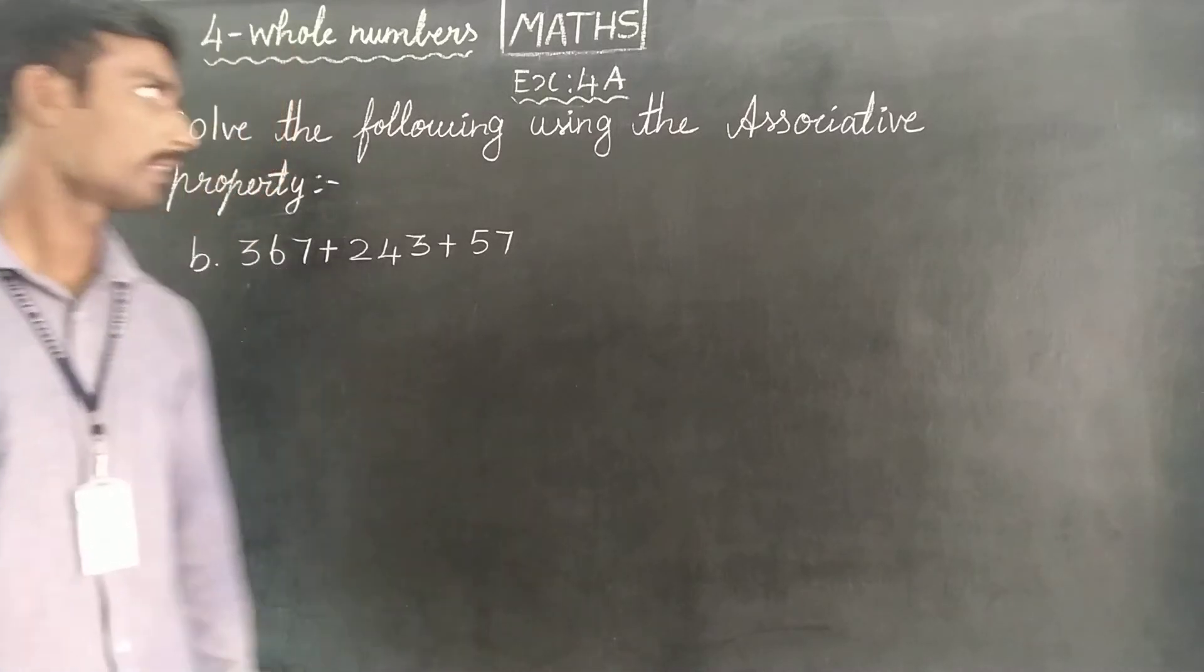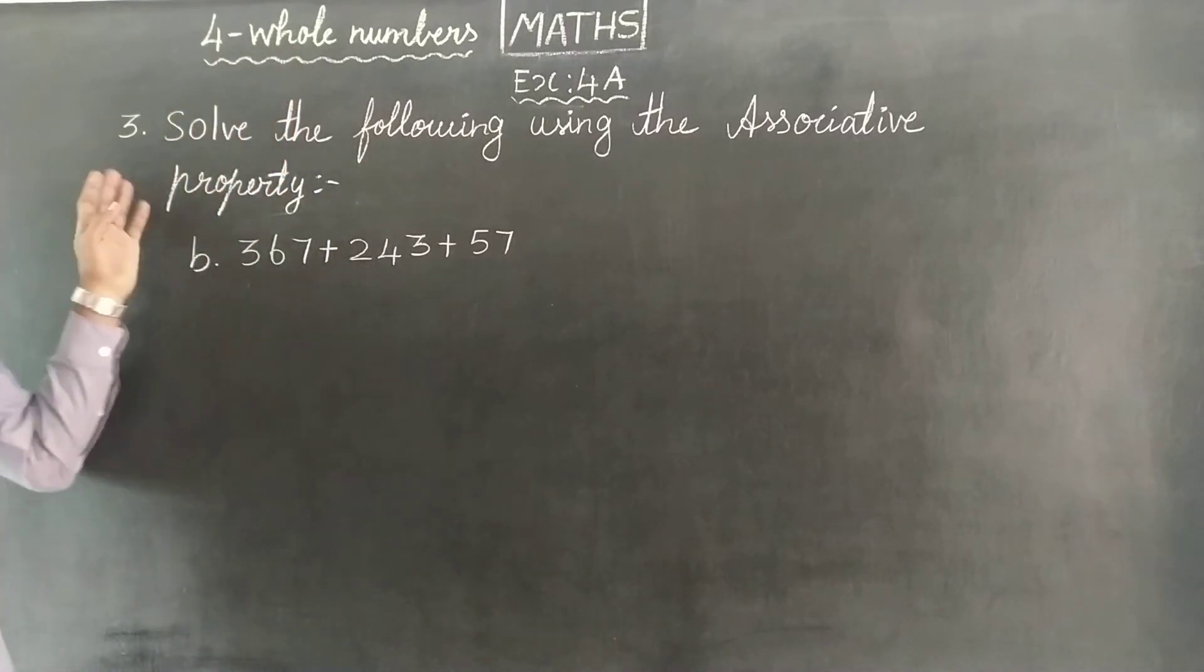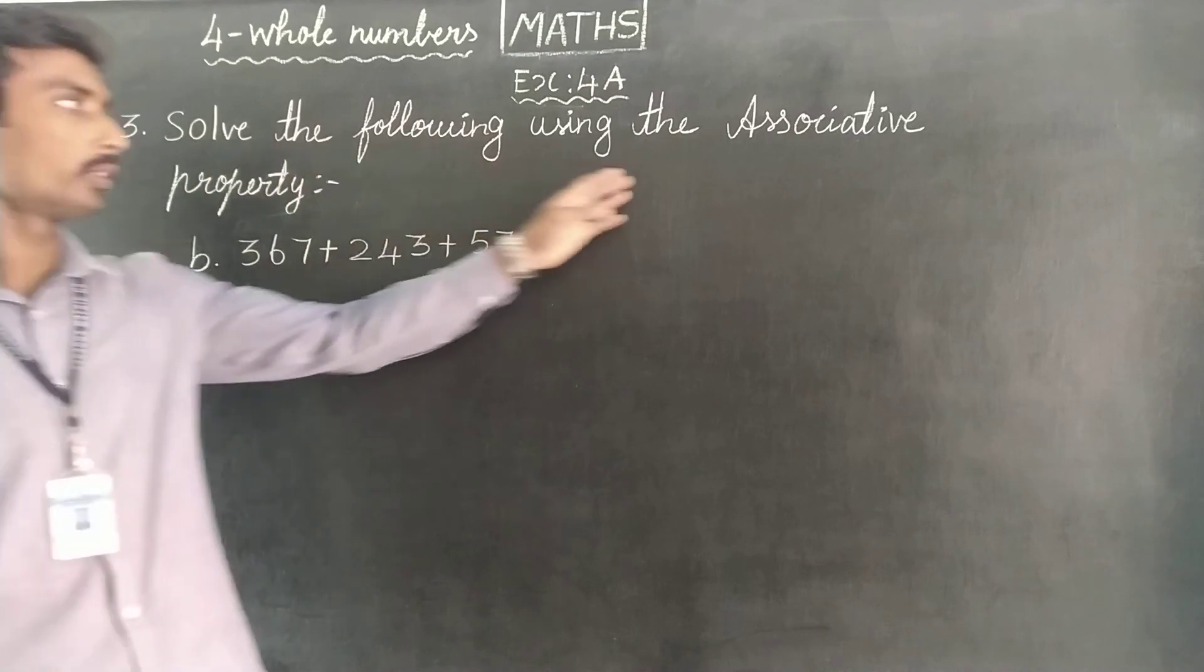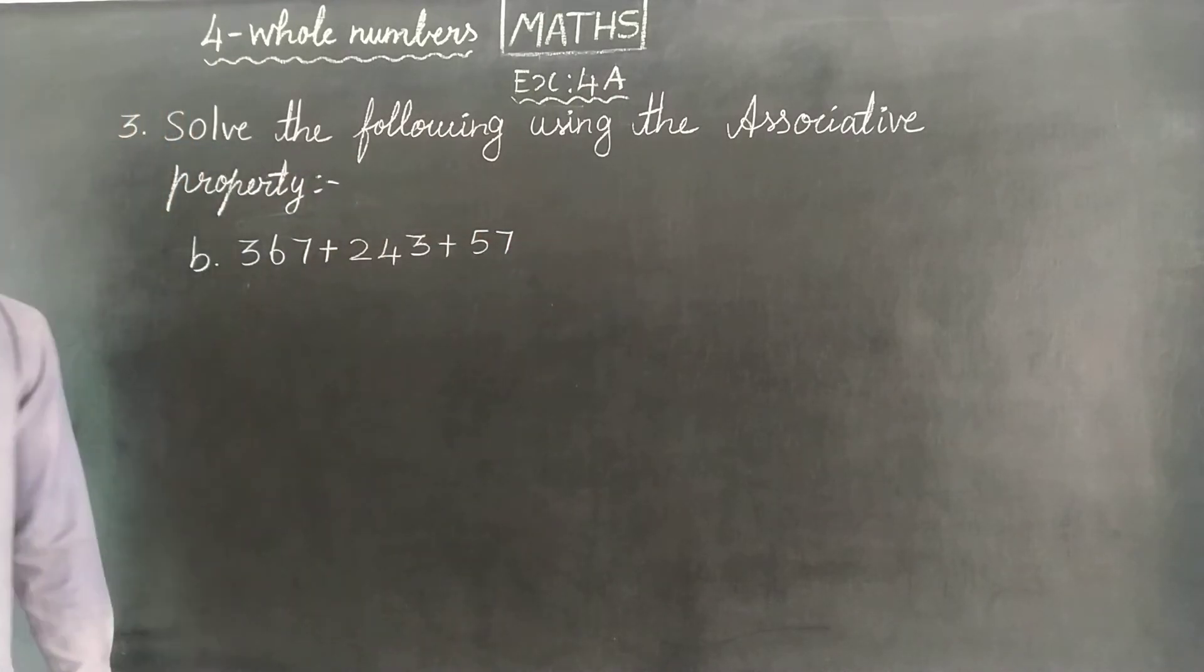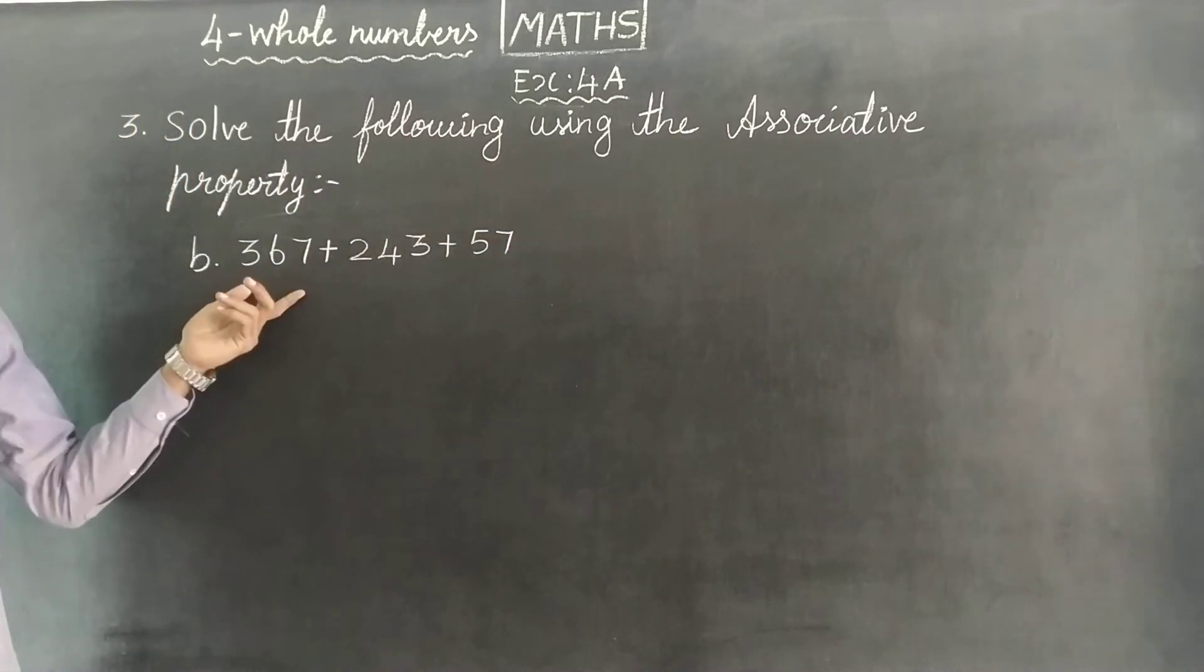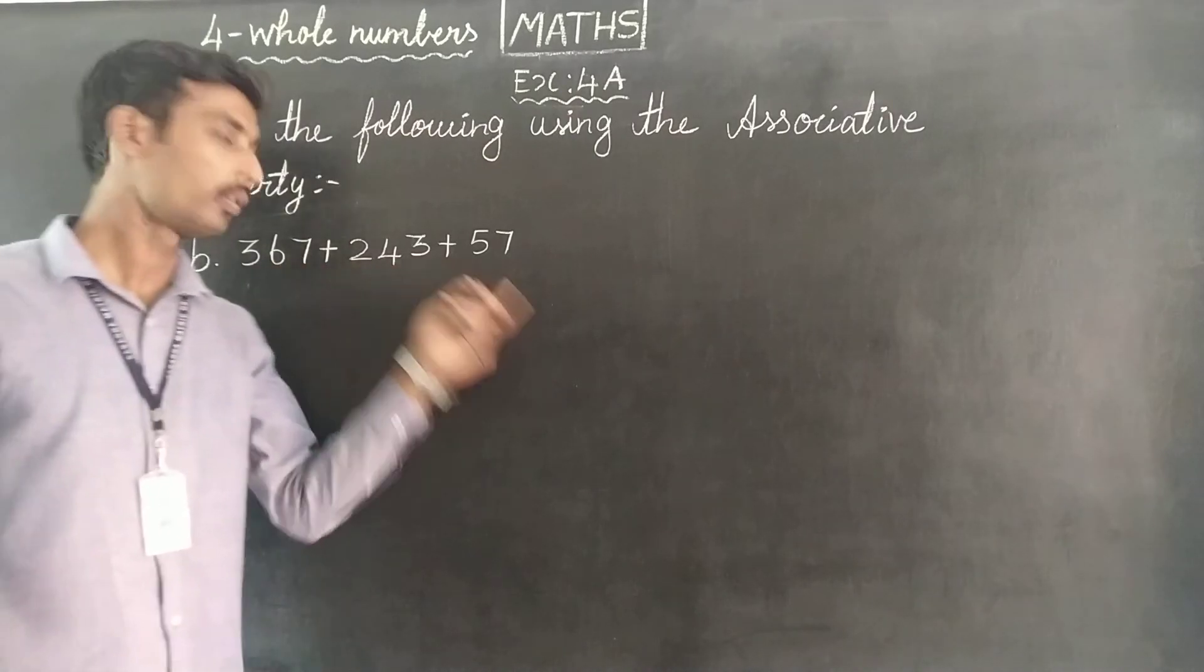Dear students, we need to see the third sum using the associative property. The sum is 367 plus 243 plus 57.